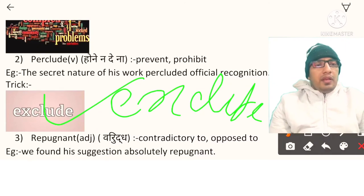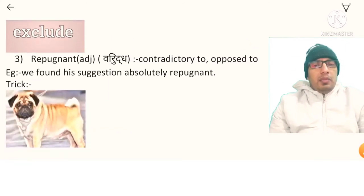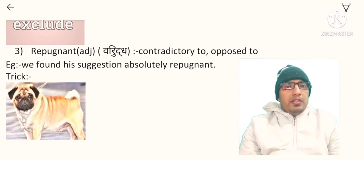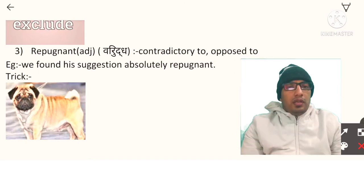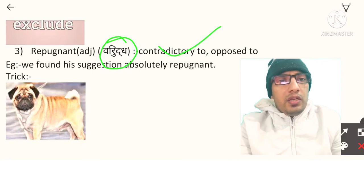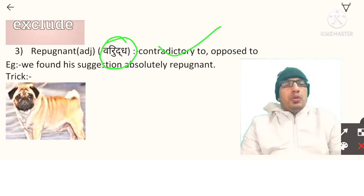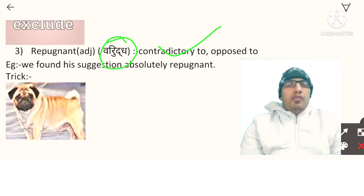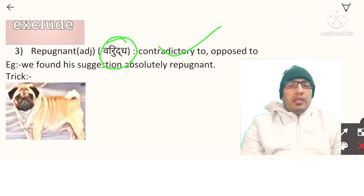The third word is repugnant. Repugnant is an adjective. The meaning is opposite, contrary, or contradictory — to be opposed to something. Example: we found his suggestion absolutely repugnant.